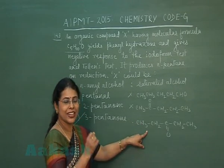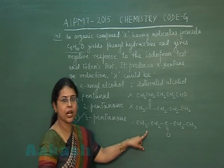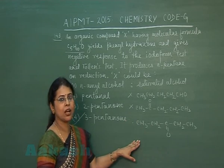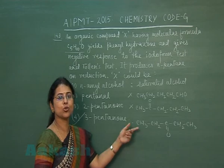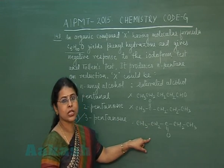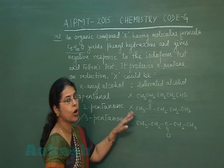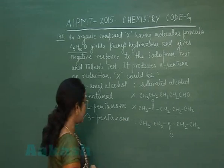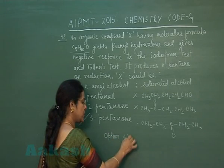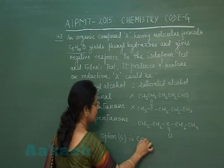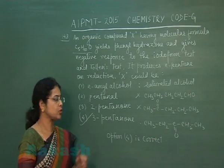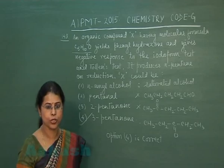3-pentanone gives a negative iodoform test. 3-pentanone gives a negative Tollens test. The keto group is present, so it will form phenylhydrazone. And when this compound is completely reduced, it will form n-pentane. Therefore, option 4, 3-pentanone, is the correct option based on the reaction sequence.